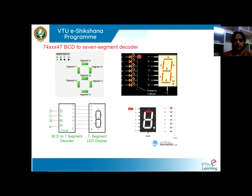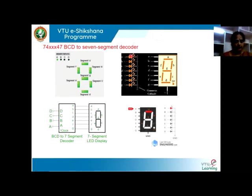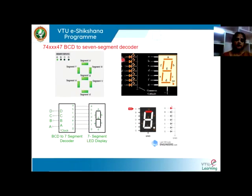In the common anode type, the anodes are shorted together and connected to VCC. By giving an active low signal to the cathode input of the LED, you switch on the LED. We know that current flows from higher potential to lower potential — when the anode is connected to VCC and the cathode is made zero, current flows through the LED and it switches on.